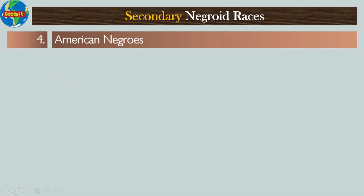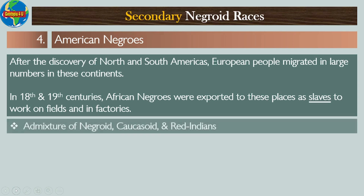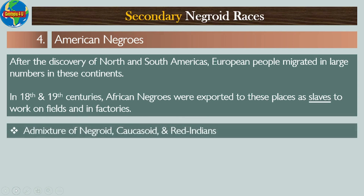Number four: American Negros. After the discovery of North and South America, European people migrated in large numbers to these continents in the 18th and 19th centuries. African negros were exported to these places as slaves to work on fields and in factories — this entire process is called the slave trade. American Negros are an admixture of Negroid, Caucasoid, and Red Indian races.